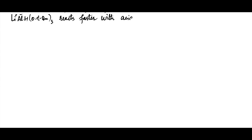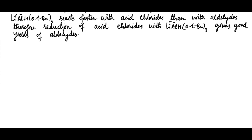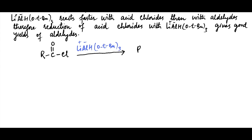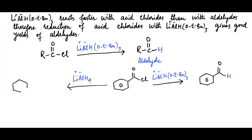Lithium tri-tert-butoxyaluminium hydride reacts faster with acid chlorides than with aldehydes. Reduction of acid chlorides with this reagent gives good yields of aldehydes. For example, this acid chloride is reduced by lithium tri-tert-butoxyaluminium hydride into an aldehyde, which is not further reduced due to the mild nature of the reagent. Likewise, another acid chloride is reduced by this reagent into an aldehyde, whereas the same acid chloride is reduced by lithium aluminium hydride (LAH) all the way to the primary alcohol.